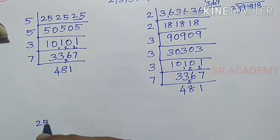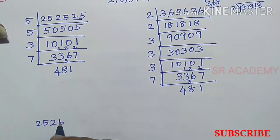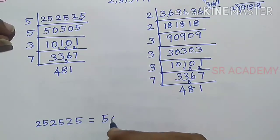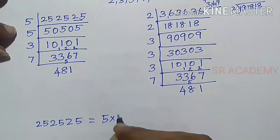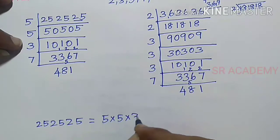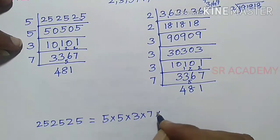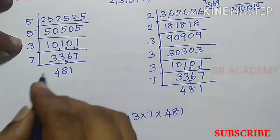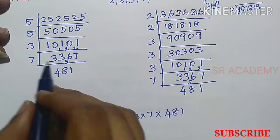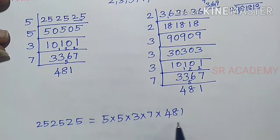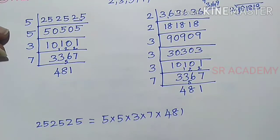So, 252525 = 5 × 5 × 5 × 3 × 7 × 481. This gives us the complete prime factorization.